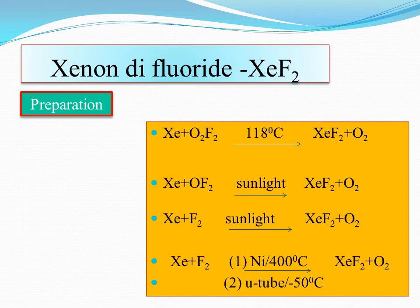For xenon difluoride (XeF2) preparation: xenon is mixed with fluorine and heated at 400 degrees centigrade, or irradiated with sunlight/UV light, or heated at minus 50 degrees centigrade, yielding XeF2 and O2. This is the method of preparation of XeF2.